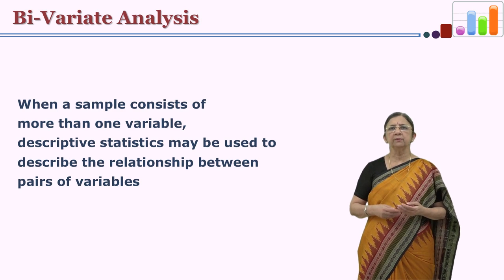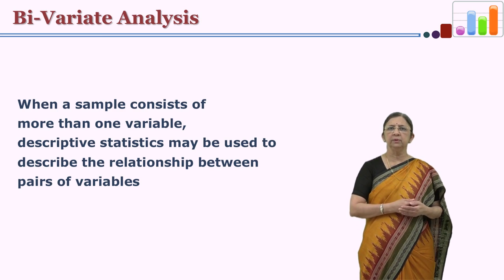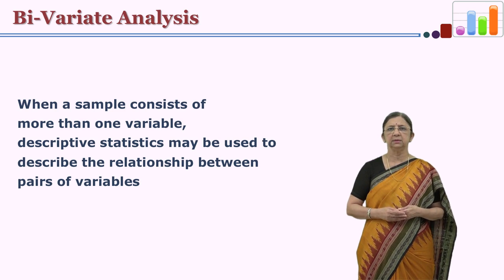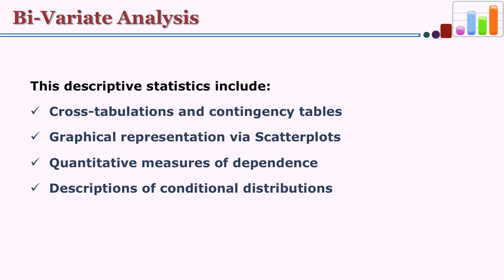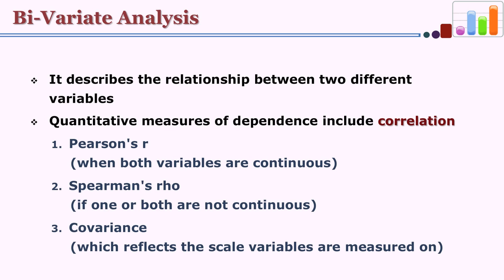When the sample consists of more than one variable, instead of univariate analysis we use bivariate analysis. There are a variety of bivariate analysis measures available, including cross tabulation and contingency tables, graphical representation via scatter plots, quantitative measures of dependence, and descriptions of conditional distributions. When we want to describe the relationship between two variables we use bivariate analysis, and one of the important measures is correlation.